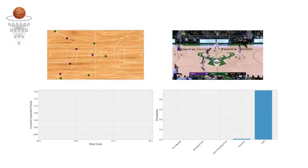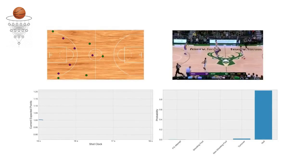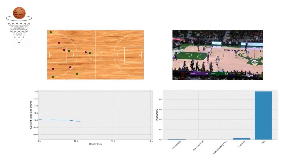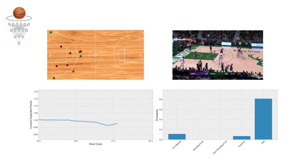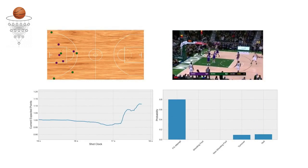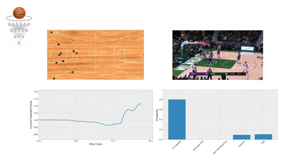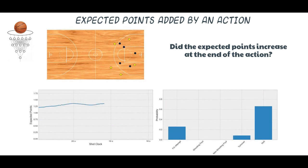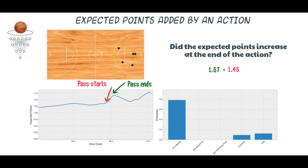Taking an expectation over this distribution provides us with the running expected points to be scored. Putting everything together, we can now follow the expected points to be scored in real time. We can now evaluate an action based on the change in the expected points. For example, this pass added approximately 0.22 points.